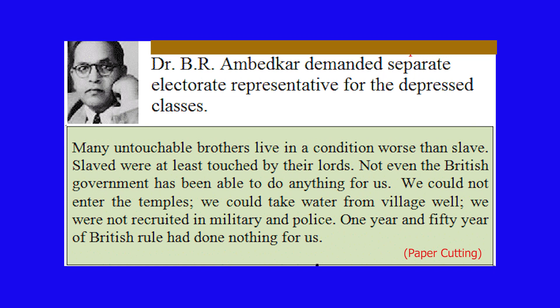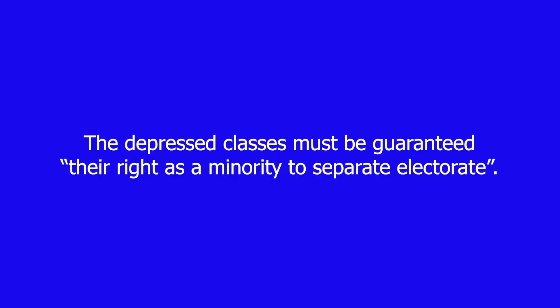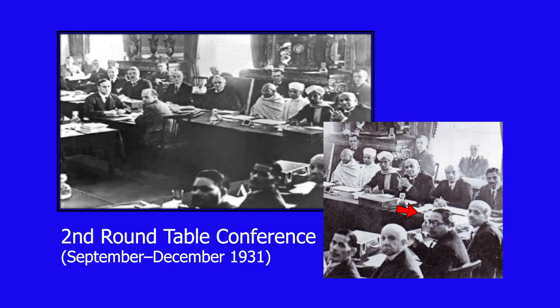As the roundtable talks failed, the government called a second roundtable conference. Dr. Ambedkar was present in the first roundtable conference and put forward the demand for separate electorate, arguing that many of his comrades were in his favor. On May 19, 1931, the All India Depressed Classes Leaders Conference was held in Bombay and formally resolved that the depressed classes must be guaranteed their right as a minority to a separate electorate. During the second roundtable conference, both Mahatma Gandhi and Dr. Ambedkar were present.